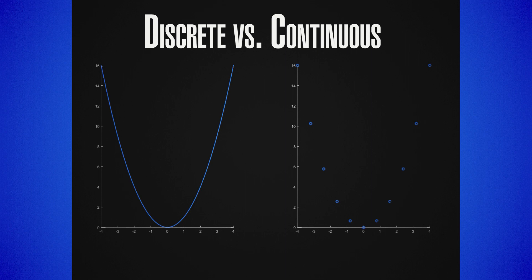The points are infinitely closely spaced and you cannot really say which point is next to another, because there are infinitely many points in any interval. Whereas on the right you have a discrete signal — you have the same general shape, but you have just a few points, and each point you can say this is the first point, this is the second point — so it is innumerable in a sense.